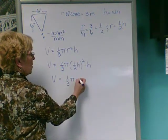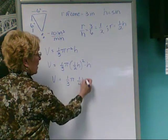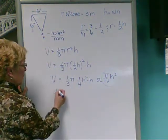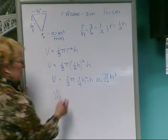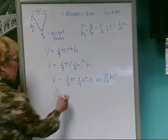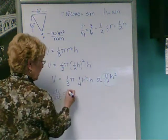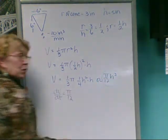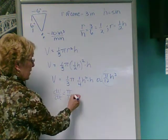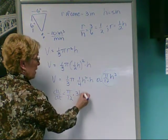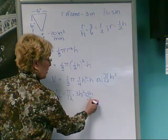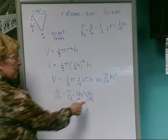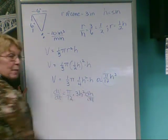That simplifies to 1 third pi 1 fourth h squared h to determine change in volume with respect to time. So pi over 12, constant multiplier. Differentiating h cubed with respect to time is going to give us 3 h squared and then dh dt because we're measuring the change with respect to time, not with respect to h.